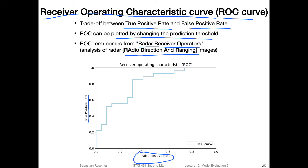What we mean by changing the threshold: if you have a binary classification problem with class zero and class one, you can have a class membership probability. This is quite natural for logistic regression, but it can also be created for other classifiers such as k-nearest neighbors and decision trees.